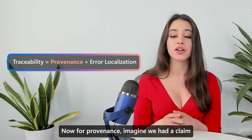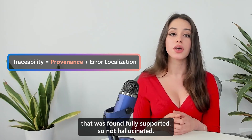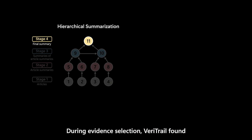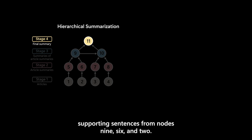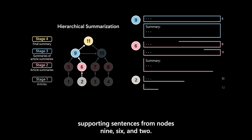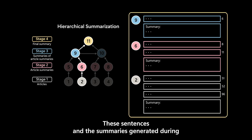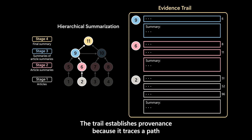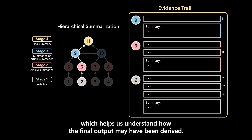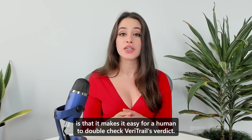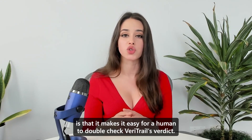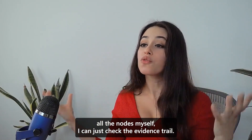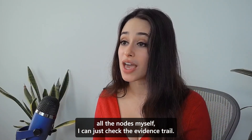For provenance, imagine we had a claim that was found fully supported — not hallucinated. During evidence selection, Veritrail found supporting sentences from nodes 9, 6, and 2. These sentences, and the summaries generated during evidence selection, form an evidence trail. The trail establishes provenance because it traces a path from the source material to the final output, helping us understand how the final output may have been derived. Another benefit of the evidence trail is that it makes it easy for a human to double-check Veritrail's verdict — instead of reading through all the nodes, you can just check the evidence trail.